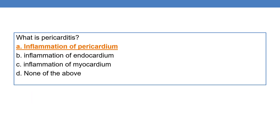Coming to the next question: what is pericarditis? 'Itis' means inflammation. Pericarditis is nothing but inflammation of the pericardium. So the correct option is option A.